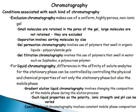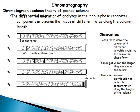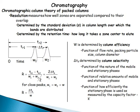Chromatography column theory: in a packed column, the differential migration of analytes in the mobile phase causes separation as components move at different rates along the column. Bands are observed to get wider and broader, with a normal distribution of molecule concentration along the column length. Chromatography resolution measures how well zones are separated by comparing their overlap, determining the standard deviation of the band distribution along the column length and the retention time — how long it takes a zone to travel through the column.